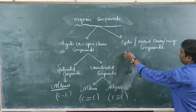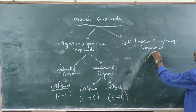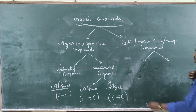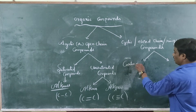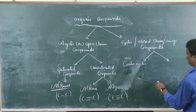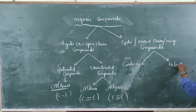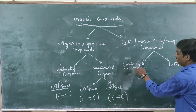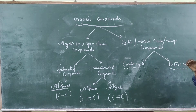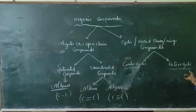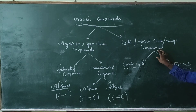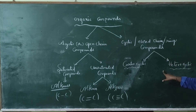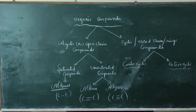Cyclic compounds are divided into two categories: carbocyclic and heterocyclic. Carbocyclic and heterocyclic compounds are ring compounds. Heterocyclic means different atoms are present in the ring.